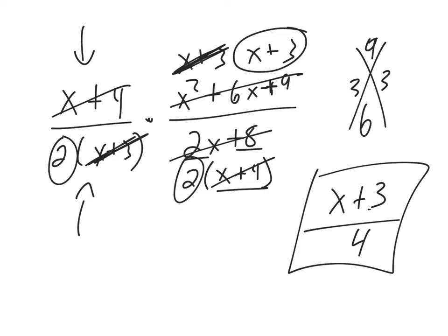So dividing is going to be the same thing, except we flip over the second guy. So let's just go with (x plus 4) again and 2 times (x plus 3) on the bottom.